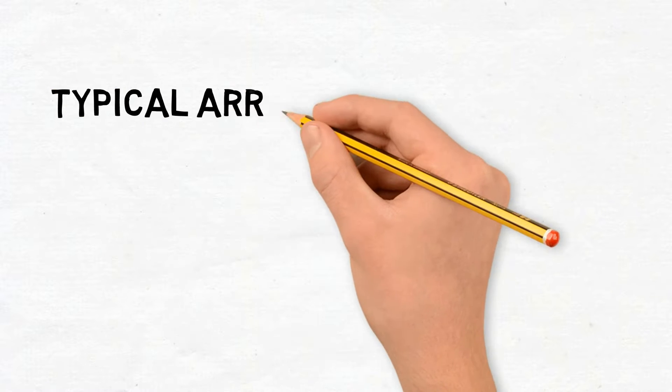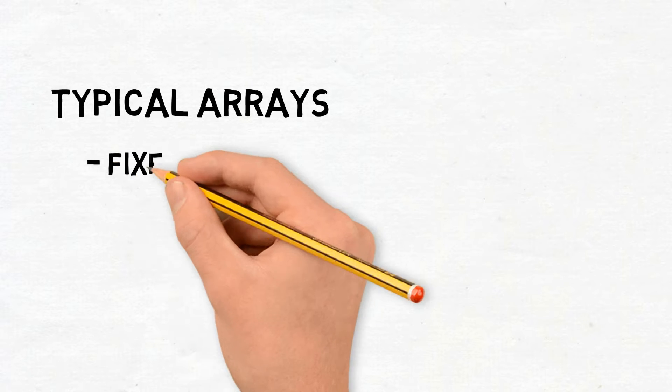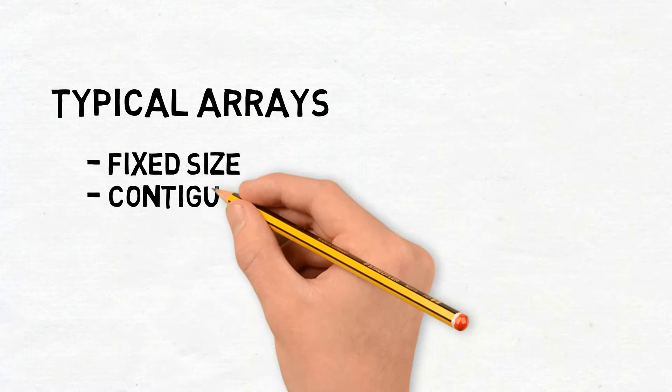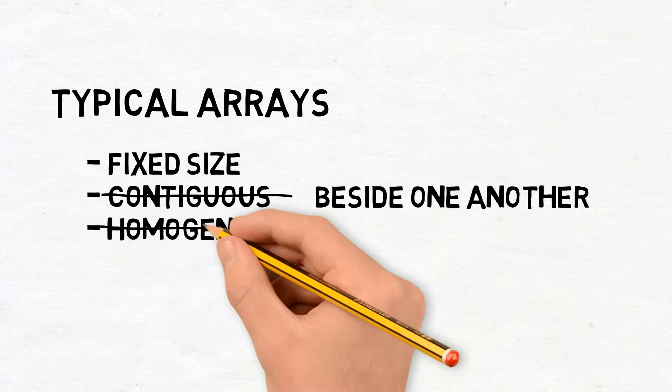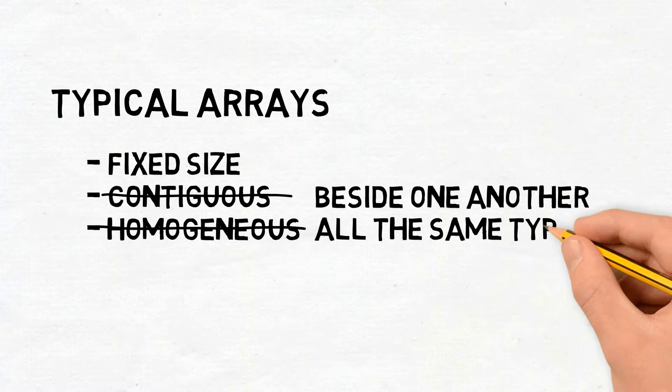So when we think about arrays in other languages, we think about them as these fixed-size, contiguous, homogeneous data structures. Contiguous is just a fancy word for beside each other. Homogeneous just means that they're all the same.